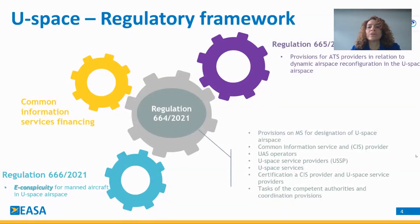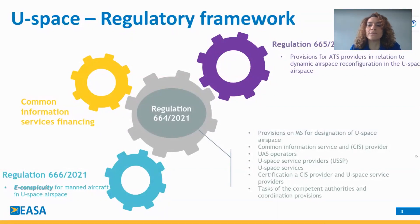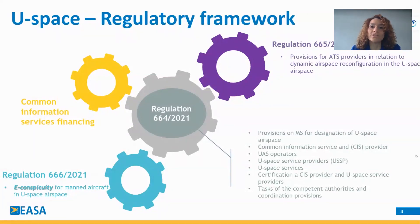We also have Regulation 665, which contains the additional requirements for the traffic service providers derived from the implementation of U-Space airspace in controlled airspace. And we have Regulation 666/2021, which is the subject of today's workshop, containing the requirements for electronic conspicuity for manned aircraft when they fly in the U-Space airspace. This regulation amends the standardized European rules of the air and adds additional requirements for manned aircraft flying in U-Space airspace.